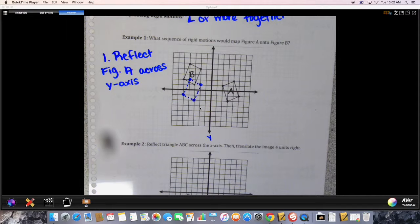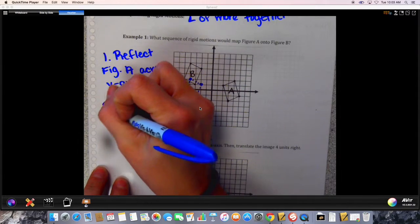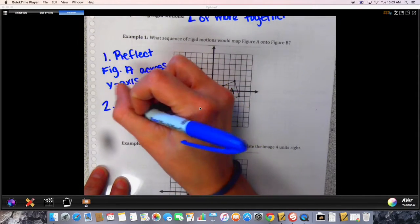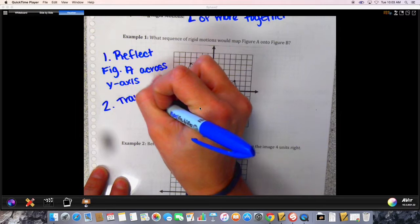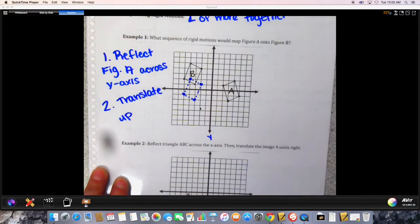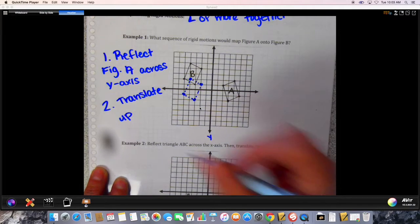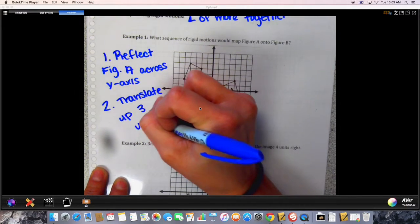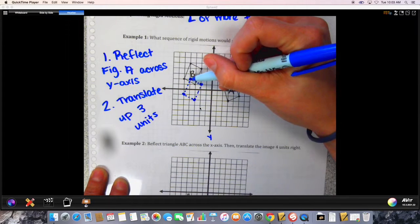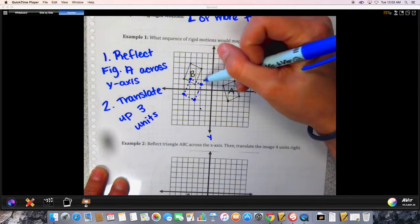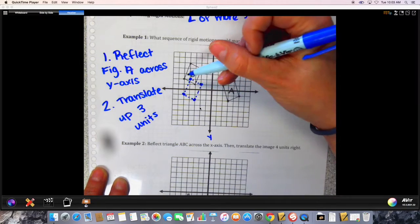Which is why this is now a sequence of rigid motions, because you didn't land right on figure B, did you? What else would you have to do now? Now you have this figure here. You need to translate right. Which direction? Translate up. How many units? Three units. So if you moved each of these dots now three units up, you should land directly on figure B, and you do.